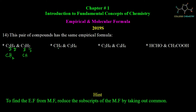CH4 has no common factor — its subscripts are already at minimum, so the empirical formula remains CH4. For C2H6, the common factor is 2. Dividing by 2 gives the empirical formula CH3. So the empirical formulas are different.